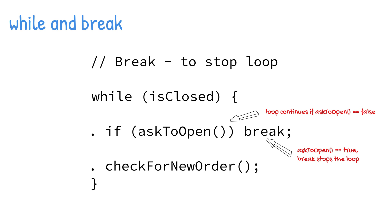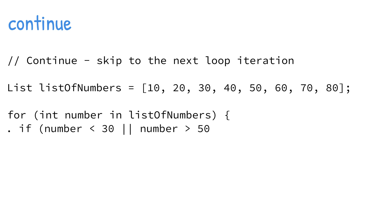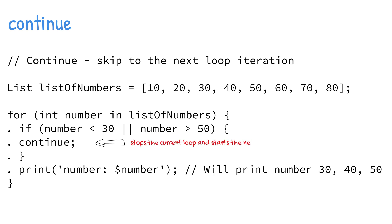By using the continue statement, you can stop at the current loop location and skip to the start of the next loop iteration. In this example, the for statement loops through a list of numbers from 10 to 80. Inside the loop, the if statement checks whether the number is less than 30 or greater than 50, and if the condition is met, the continue statement stops the current loop and starts the next iteration. Using the print statement, you can see that only the numbers 30, 40, and 50 are printed to the log.